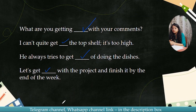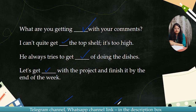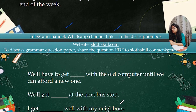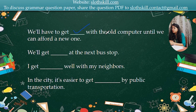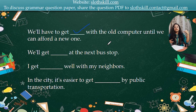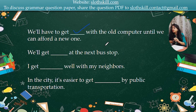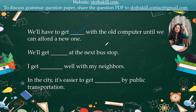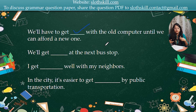Don't forget to stay connected on the Telegram channel and the WhatsApp channel so that you don't miss anything. Sometimes practice series are provided there. Next: We will have to get [blank] with the old computer until we can afford a new one. Till the time we can afford a new one, we have to continue using the old one — so the answer is get by.